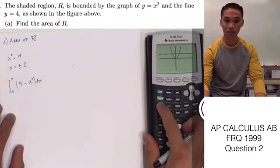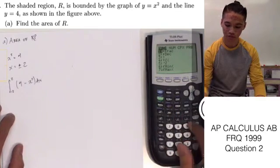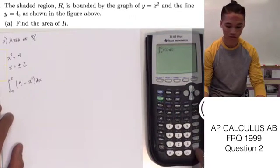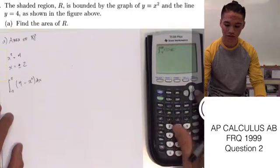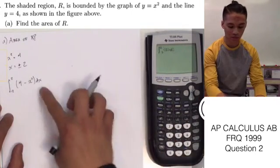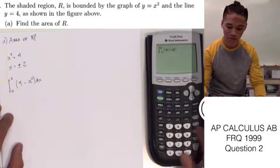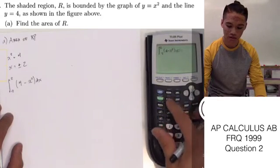What we can do now is go ahead and plug this into our calculator. Math 9 from negative 2 to 2. We can just plug this in manually: it's going to be 4 minus x squared dx.